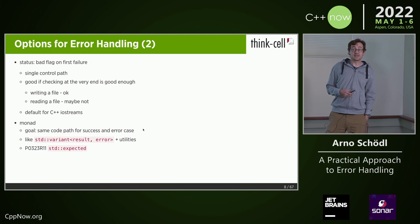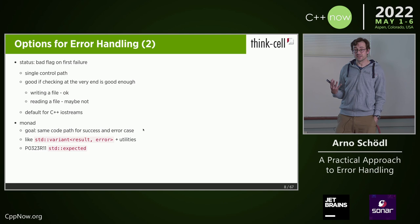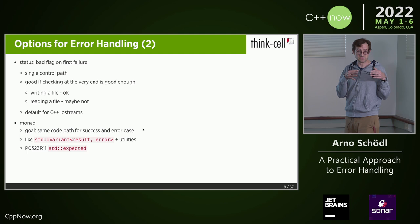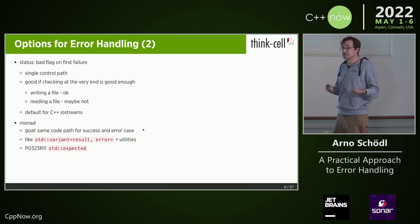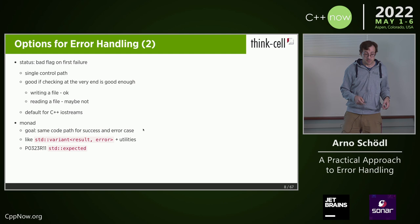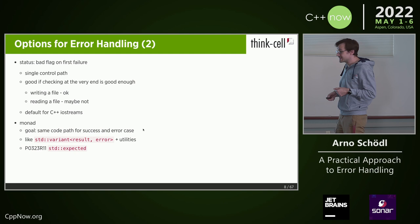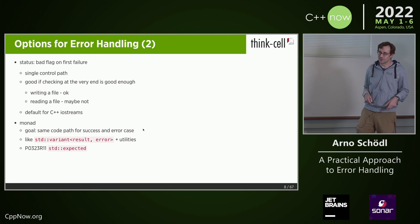One other, more modern way to deal with errors are monads. The goal is to have the same code path for success and error. It's a bit like a std::variant where you have either some success result or some error code, plus utilities to pass these things through your code. There's probably something like that coming for C++23 — the P0323 proposal making its way through the standard committee. It's now at revision 11, actively being worked on. Hopefully it'll get finalized and we'll get std::expected.